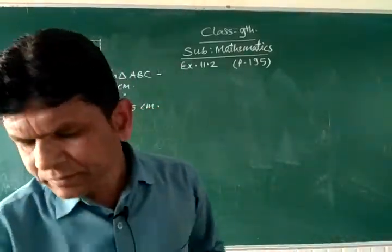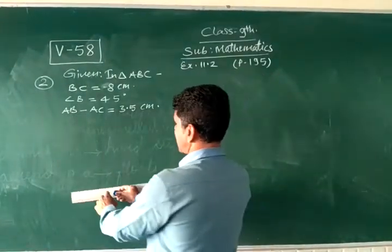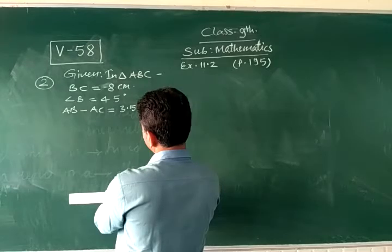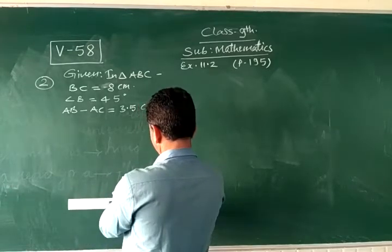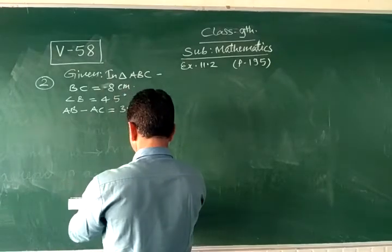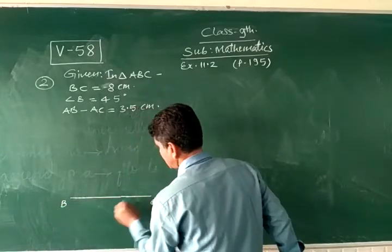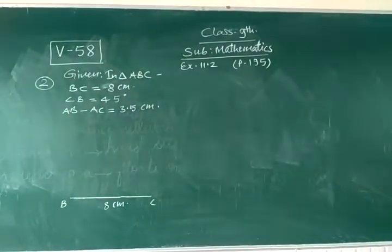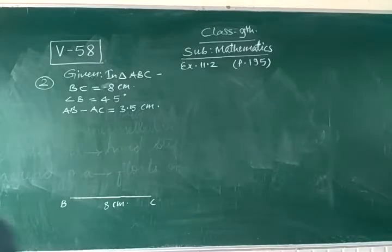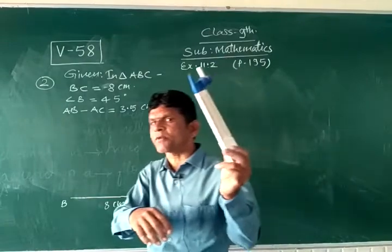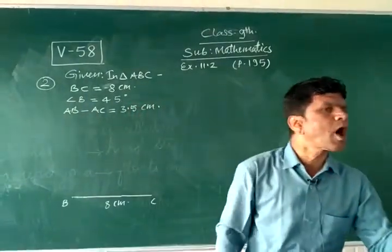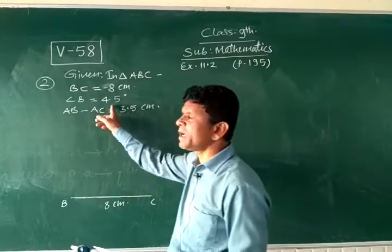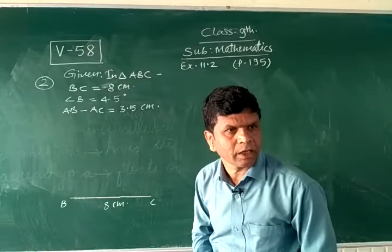Now we start. Draw a line segment BC is 8 cm. This is BC, 8 cm. We have drawn a line segment. Now we draw angle 45 degrees with the help of compass. See carefully again, those students who are unable to draw the angle with the help of compass, please see again. We are drawing here 45 degree angle, so before it draw 90 degree and we bisect it.